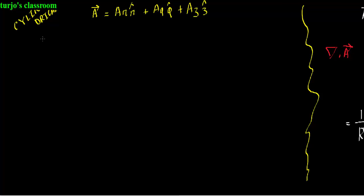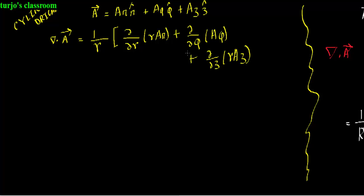So once again, using the formula of divergence A, here the multiplication of h1, h2, and h3 will be r. Because in cylindrical coordinate system, h1 and h3 is one, only h2 is r. Therefore, the multiplication of these three will be r. And we can easily simplify this line with our knowledge of partial differentiation.